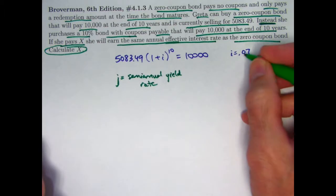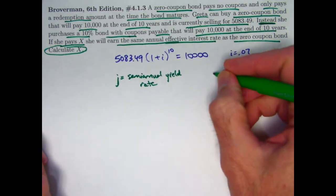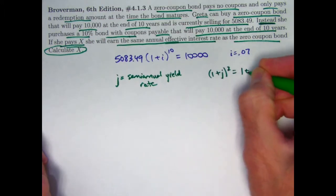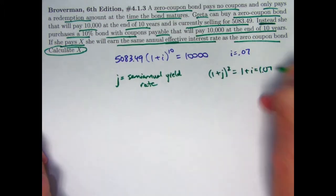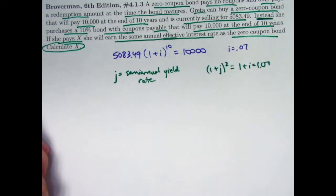To have an effective annual interest rate of I equals 7%, it would have to be the case that 1 plus J squared would be 1 plus I would be 1.07. Let's solve this equation for J to find our semi-annual yield rate for the coupon bond.